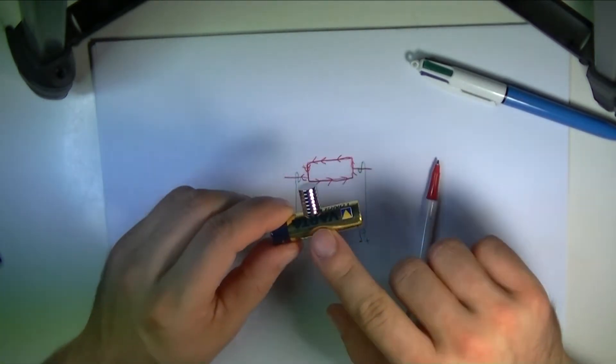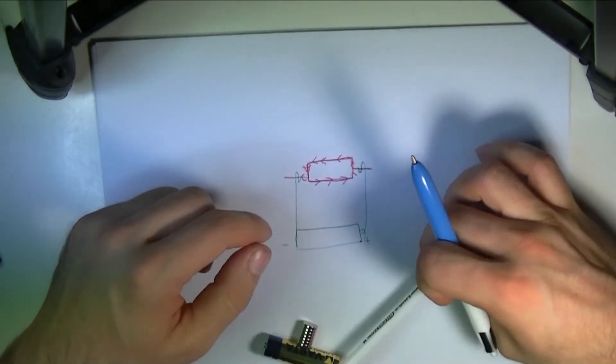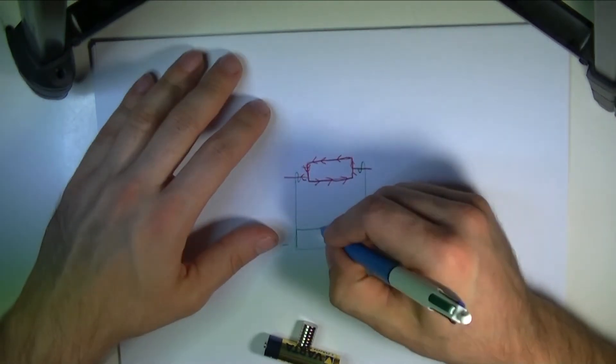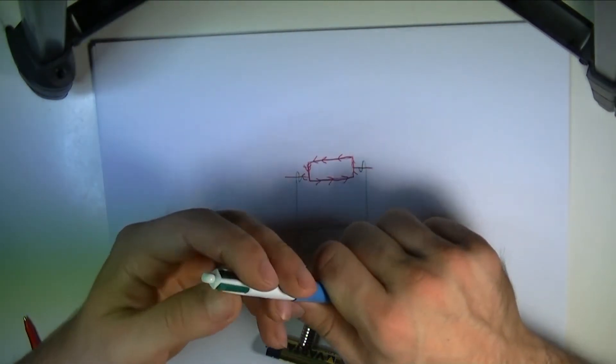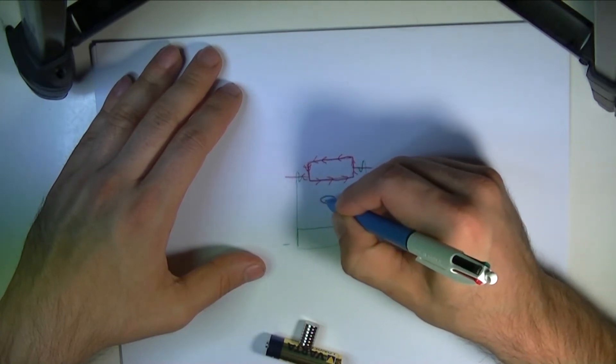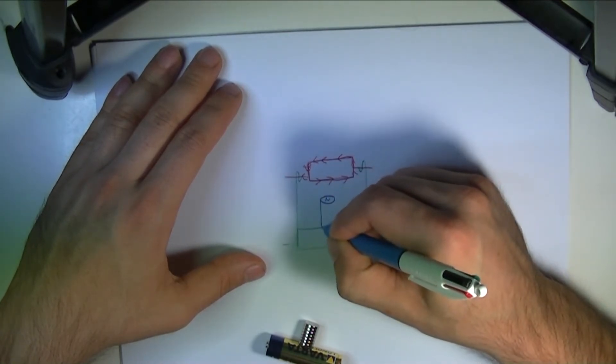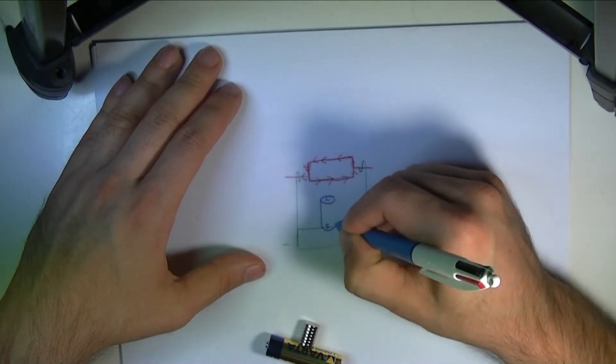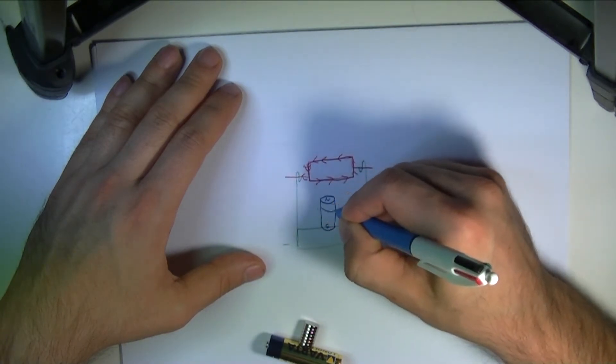And just like I have here on this battery I'm going to place a stack of magnets and I'm going to color them blue. We're going to have north at the top, south at the bottom.